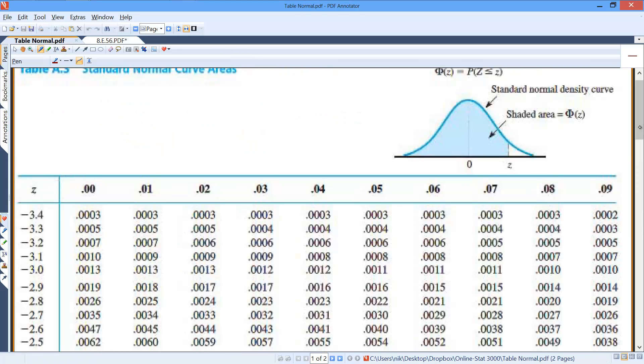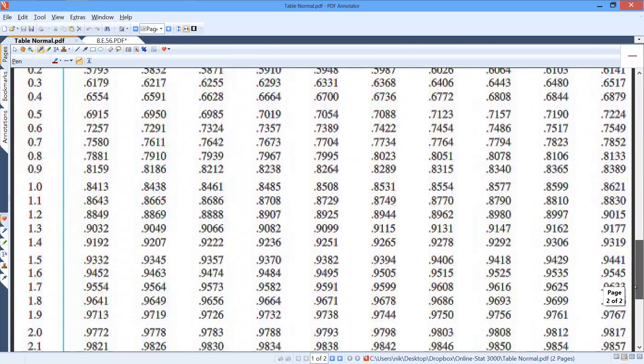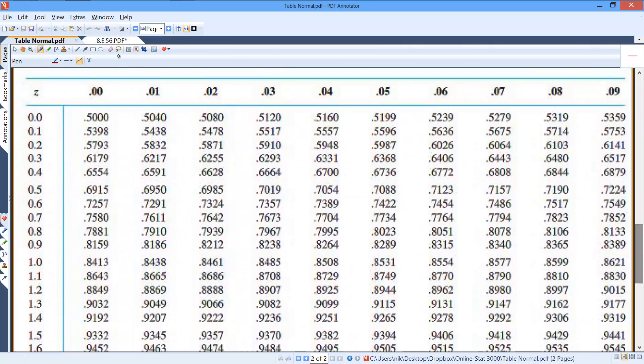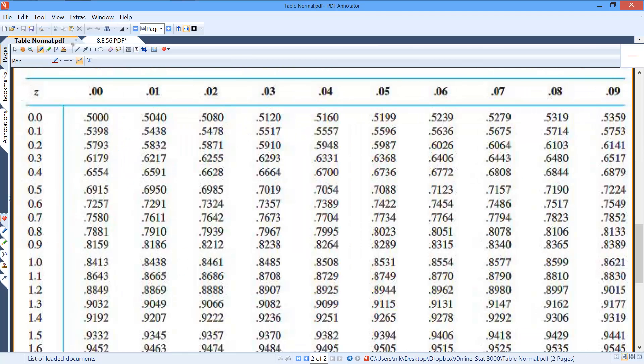So coming through the table, if I look up 1.2, let's see, there's 1.206, let's round to 1.21. You get 0.8869, and that's the area to the left.